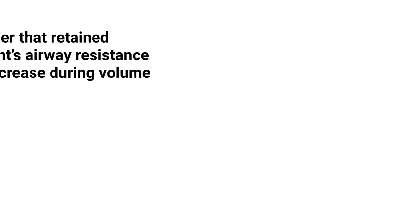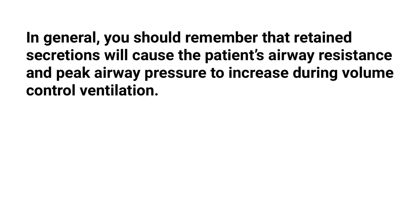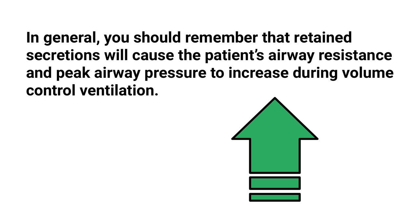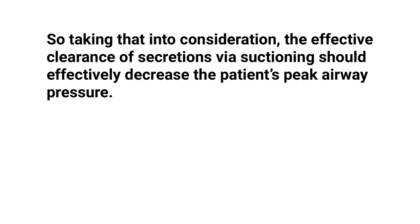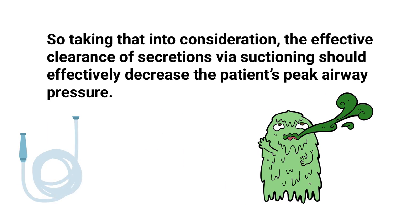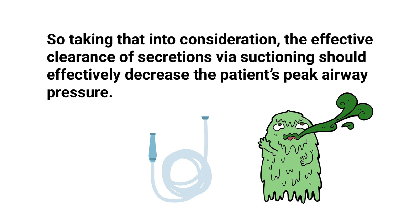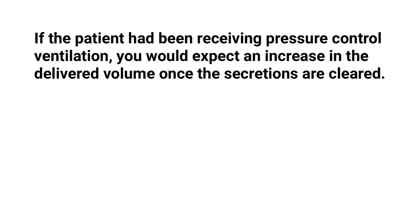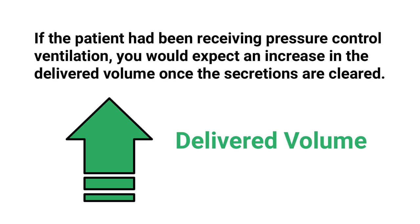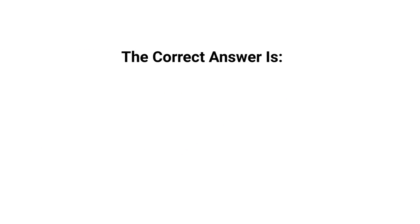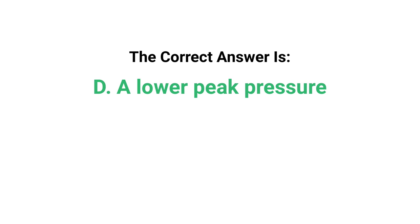Retained secretions will cause the patient's airway resistance and peak airway pressure to increase during volume control ventilation. Therefore, effective clearance of secretions via suctioning should decrease the patient's peak airway pressure. By contrast, if the patient had been receiving pressure control ventilation, you would expect an increase in delivered volume once the secretions are cleared. The correct answer is D: a lower peak pressure.